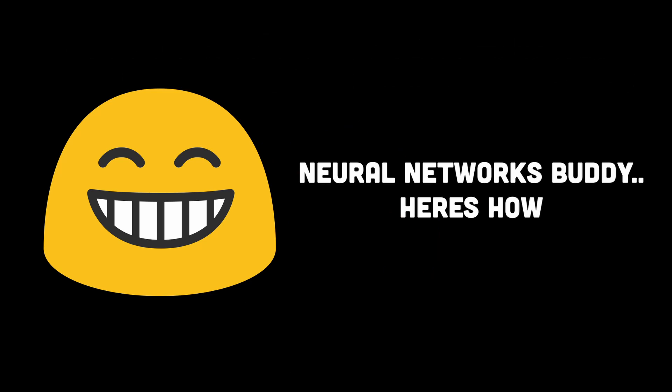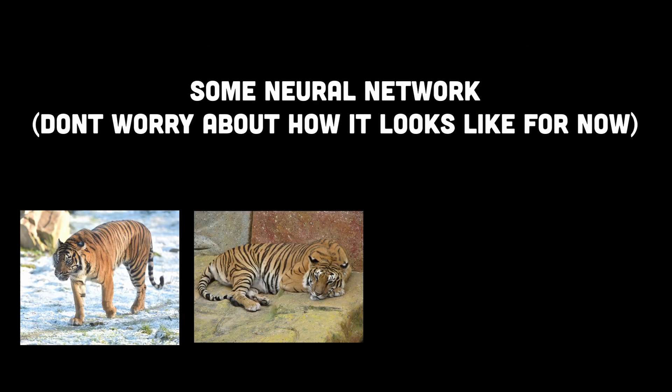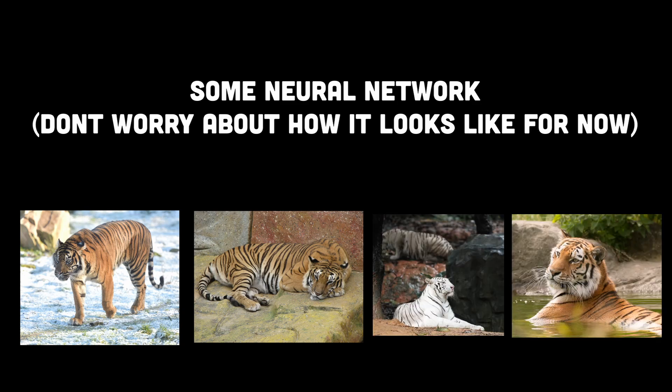We simply train our computer-generated neural network by exposing it to an enormous amount of images, where each image is an input or example. The more examples we provide, the bigger the chance that our neural network recognizes the subject — which is the tiger image in our case.